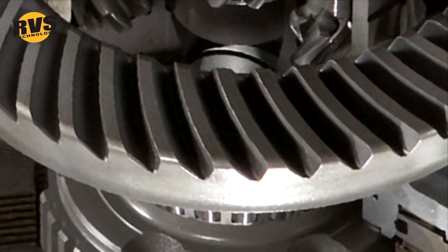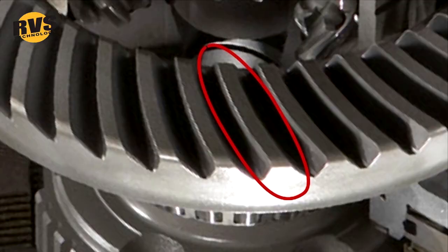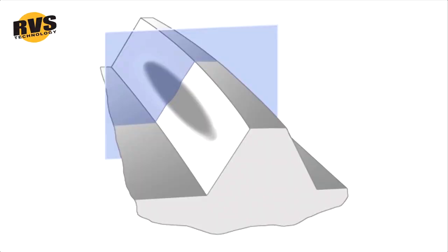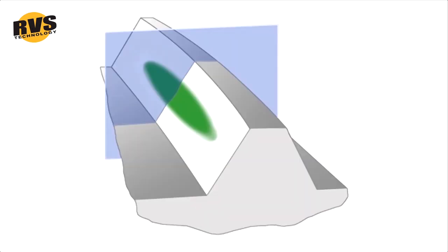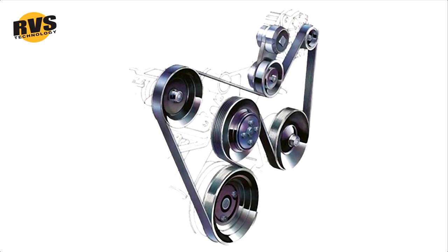The triboceramic surface forms only over worn areas where frictional heat is generated. RVS technology is smart. It covers heavily worn surfaces with a thicker layer than surfaces with less wear damage. No friction and wear means no new surface.